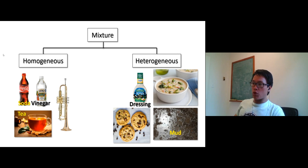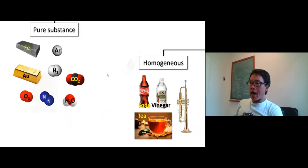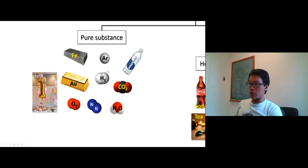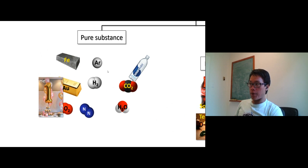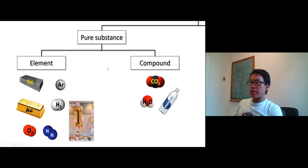We talked about mixtures, so we have uniform and not uniform. The uniform one we call homogeneous mixture, and the not uniform one is heterogeneous. Now we're going to move on to the other side, the pure substance, which consists of one substance. Pure substance can be divided into two groups: we have an element, we have the compound.